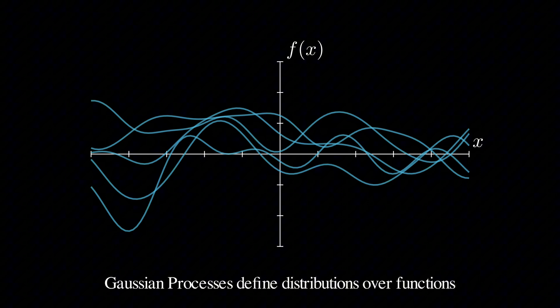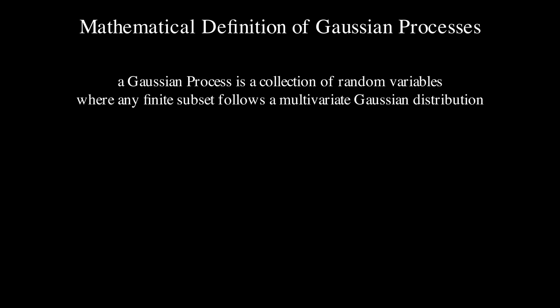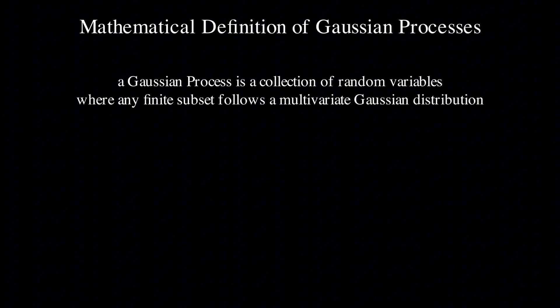Now, before we get into specific examples, let's talk about how we define a Gaussian process mathematically. A Gaussian process is a collection of random variables where any finite subset follows a multivariate Gaussian distribution. That's a mouthful, but it's actually quite intuitive.